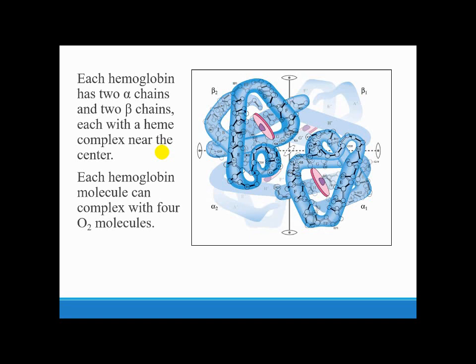Each hemoglobin has two alpha chains and two beta chains, each with a heme complex near the center, and each hemoglobin molecule can complex with four O2 molecules. Here you can see this is one unit myoglobin, second myoglobin, third and fourth. These are arranged in a fashion where you have beta 1, beta 2, alpha 1 and alpha 2. Oxygen molecules are associated, meaning four iron atoms are present in one hemoglobin unit.